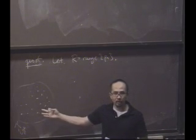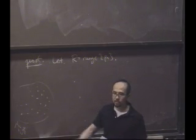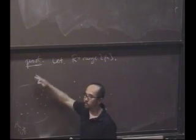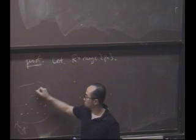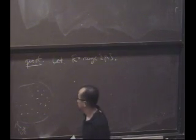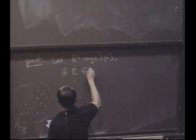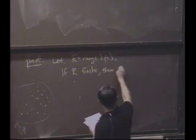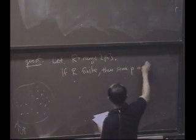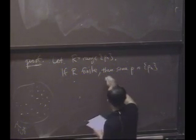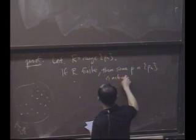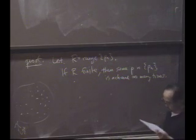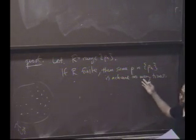then can you show that this sequence has a convergent subsequence? Yeah, Jacob's saying yes, because if you only hit finitely many things, and there are infinitely many points of the sequence, one of those points must be hit infinitely many times. Okay, so if R finite, then some value, some P in P_N, is achieved infinitely many times.